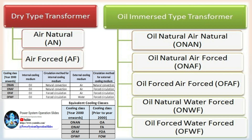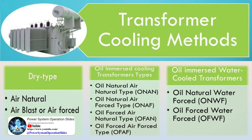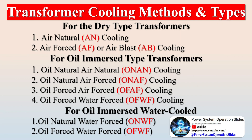Transformer cooling methods and types: For dry type transformers — (1) Air Natural (AN) cooling, (2) Air Forced (AF) or Air Blast (AB) cooling. For oil immersed type transformers — (1) Oil Natural Air Natural (ONAN) cooling, (2) Oil Natural Air Forced (ONAF) cooling, (3) Oil Forced Air Forced (OFAF) cooling. For oil immersed water cooled transformers — (1) Oil Natural Water Forced (ONWF), (2) Oil Forced Water Forced (OFWF).